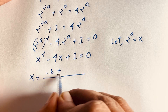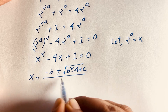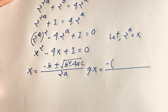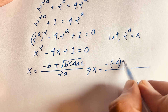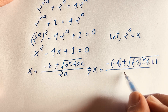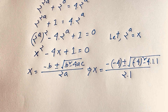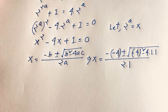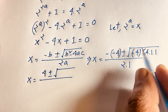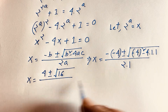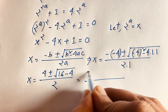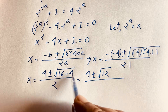Using the quadratic formula, x = [−b ± √(b² − 4ac)] / 2a, where a = 1, b = −4, c = 1. This gives x = [4 ± √(16 − 4)] / 2, which simplifies to x = [4 ± √12] / 2.